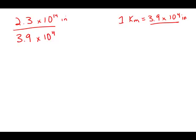Now at this point, you might be tempted to do long division. Really, it is a mistake ever to do long division on the GMAT. Whenever you have numbers like this, the best thing to do is to estimate. So I'm going to estimate 2.3 — that's pretty close to 2. And 3.9 — that's pretty close to 4. So I'm going to do 2 times 10 to the 14th over 4 times 10 to the 4th.